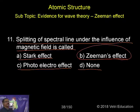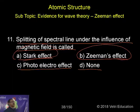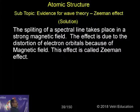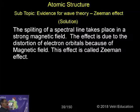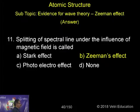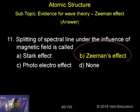Can you follow? Under an electric field, it is called the Stark effect. So the correct answer is Zeeman effect — the splitting of a spectral line placed in a strong magnetic field, due to the distortion of electron orbitals because of the magnetic field, is called the Zeeman effect. Correct answer: Zeeman effect.